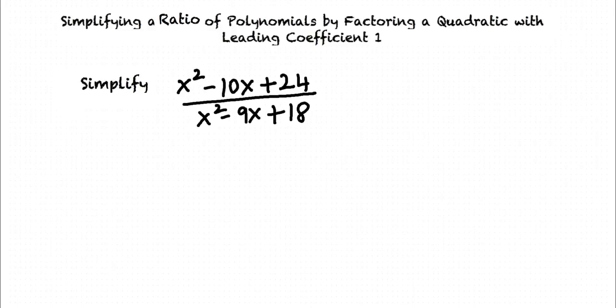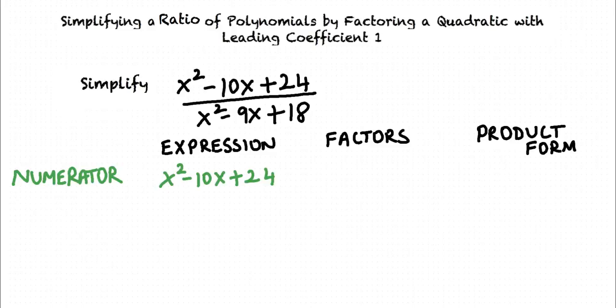In such a case, we have to factorize both the numerator and the denominator. Consider the numerator x² minus 10x plus 24. The factors of this expression are x minus 6 and x minus 4. Expressing the numerator as a product of its factors, we get x² minus 10x plus 24 equals x minus 6 times x minus 4.